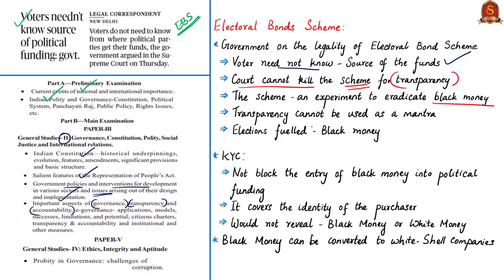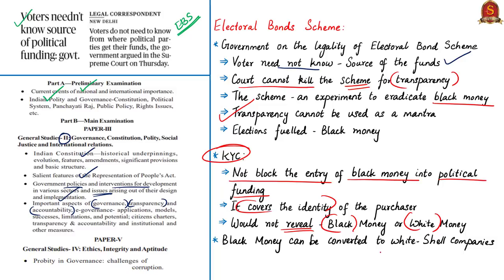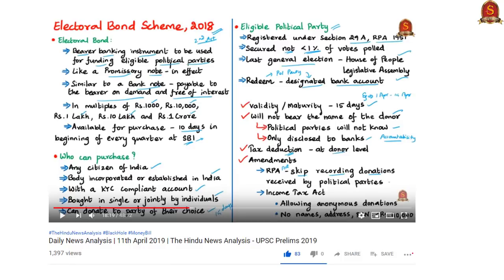The attorney general argued that transparency cannot be used as a mantra and that elections are being fueled by black money, which is democracy's greatest evil. The Supreme Court bench added that merely knowing KYC information would not block the entry of black money into political funding, as KYC only covers the identity of the bond purchaser and would not tell whether the money used was black or white. Furthermore, black money could be converted to white by routing it through multiple shell companies. The stand of the Election Commission of India and a clear explanation of the electoral bond scheme was covered in the daily news analysis video of 11th April 2019.